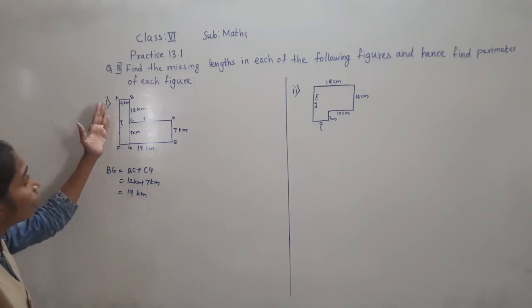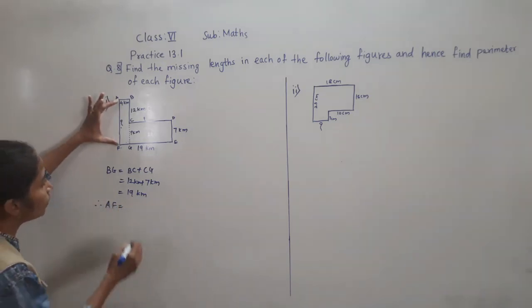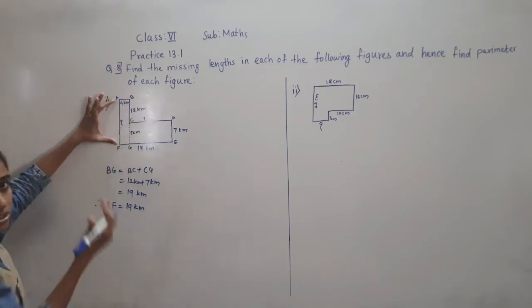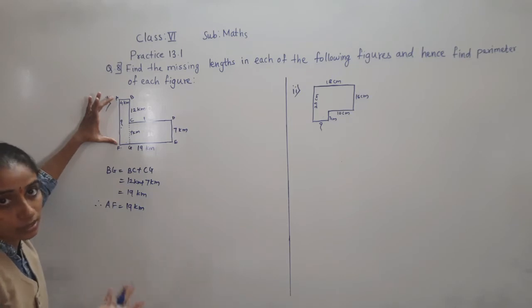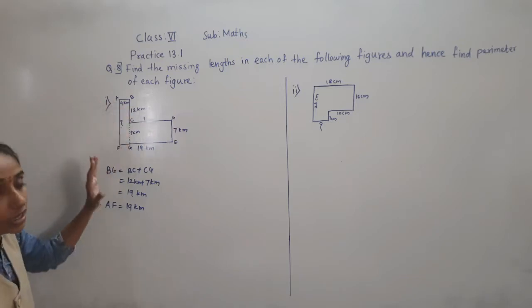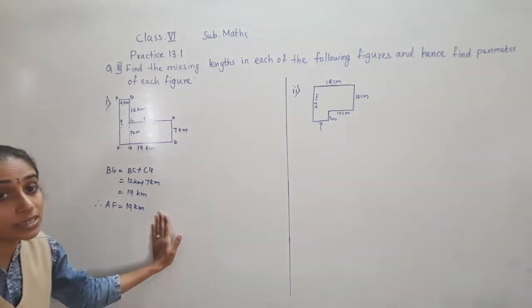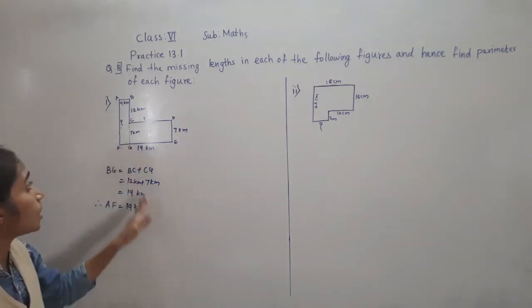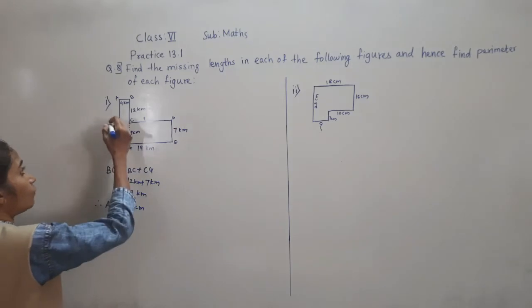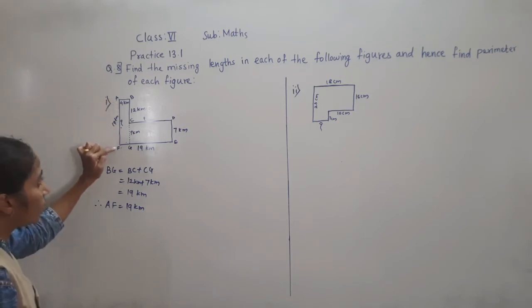Now AF: AF is opposite side of BG, and opposite sides of rectangles are equal. BG is 19 km, so AF is also 19 km. Therefore AF = 19 km.